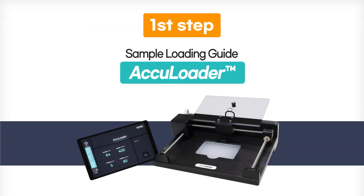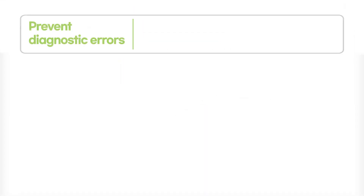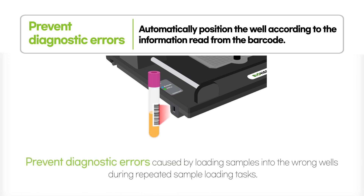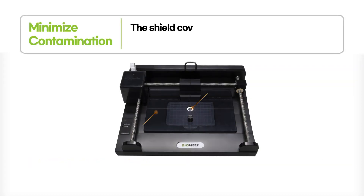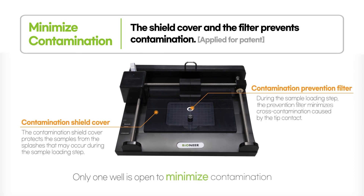The first step addresses the repeated loading of a large number of samples by the operator. AccuLoader automatically positions the well according to sample information by reading the barcode, therefore preventing diagnostic errors caused by loading samples into incorrect wells.